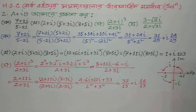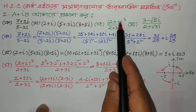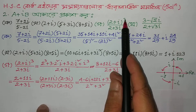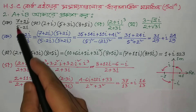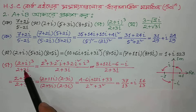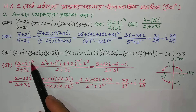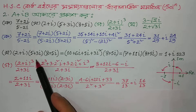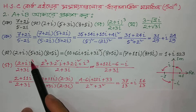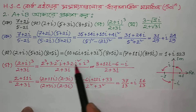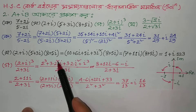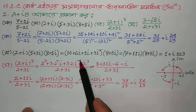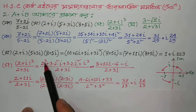For problem g, we need to find (2 plus i) whole cube. That is, if it were 2 plus i over 2 plus 3i it would be very simple. But it is a little twisted. We see that (2 plus i) cubed is given. Since it is a cube, we apply the formula: a plus b whole cube equals a cube plus 3a squared b plus 3ab squared plus b cube. We write the formula.